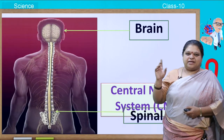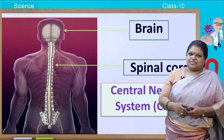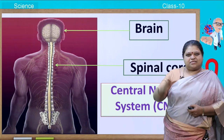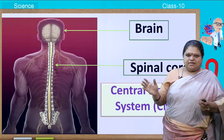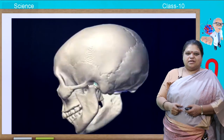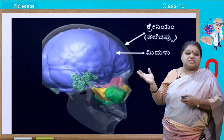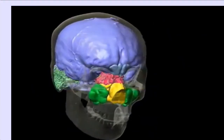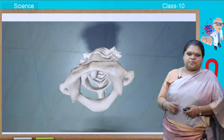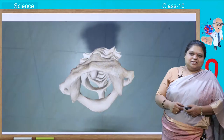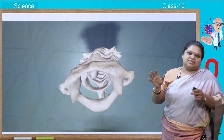The brain and spinal cord come under the central nervous system, that is CNS — central because it is the centre of all messages, impulses, and thinking. The brain is protected by the hard cranium, which you call the skull. The spinal cord is protected by the vertebral column, which surrounds the spinal cord.